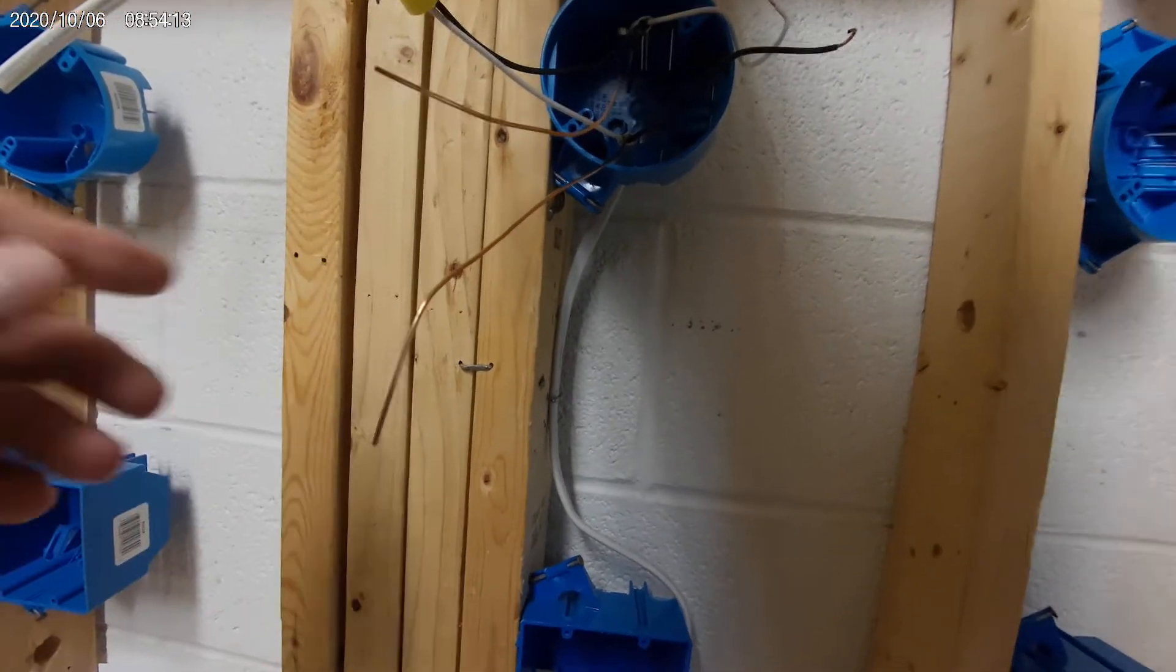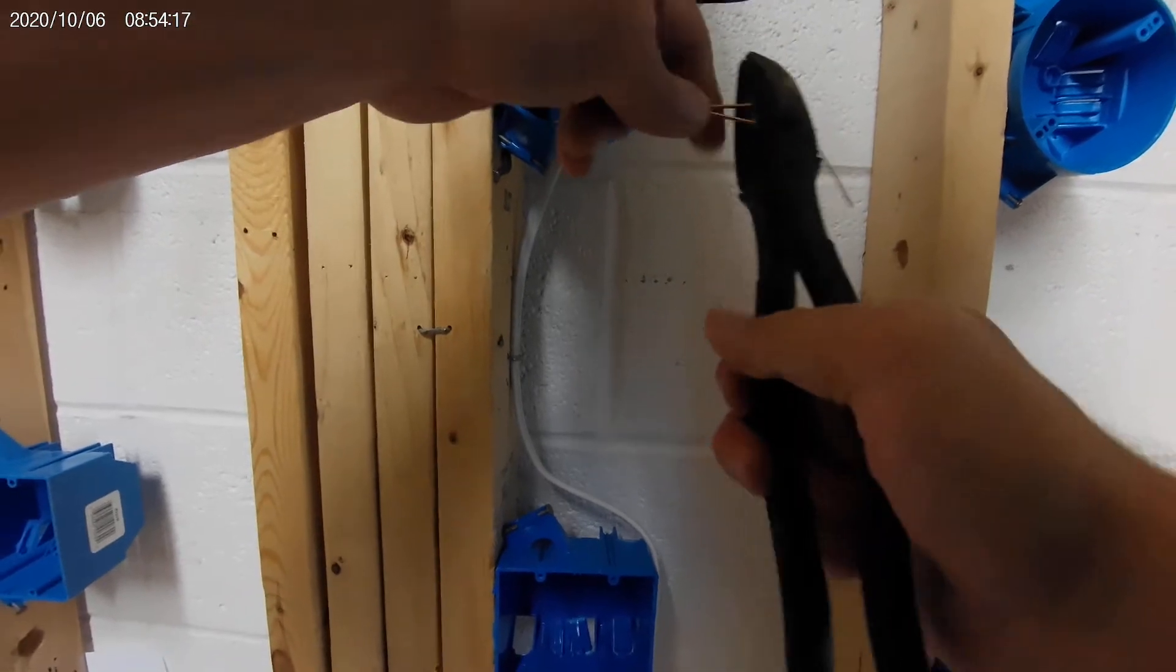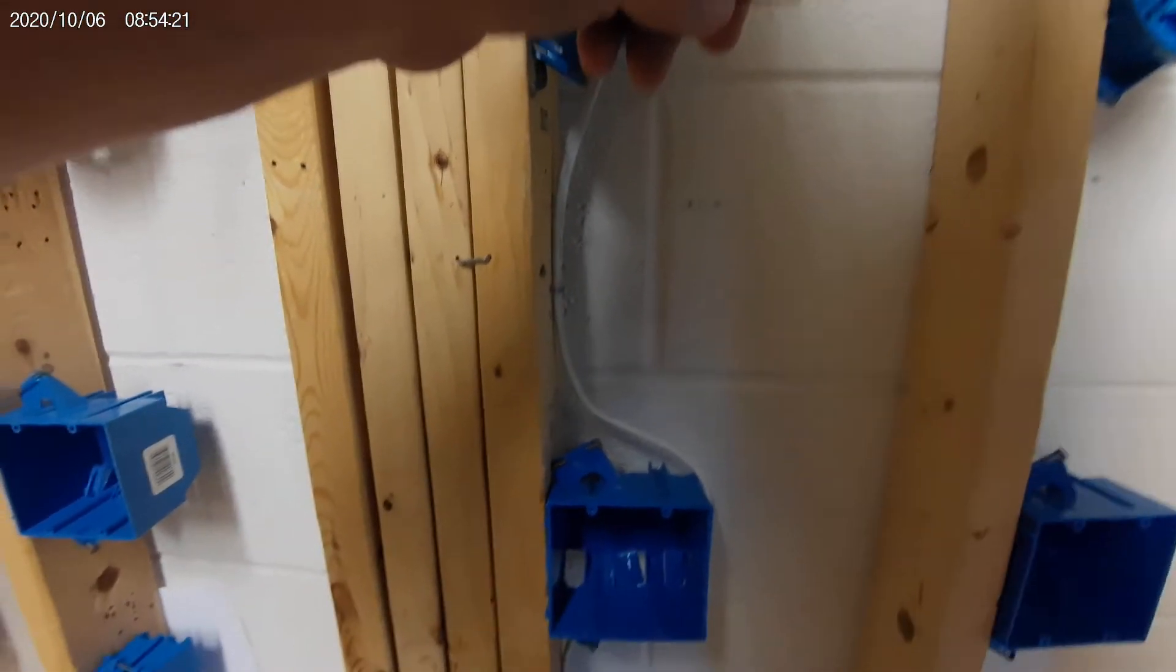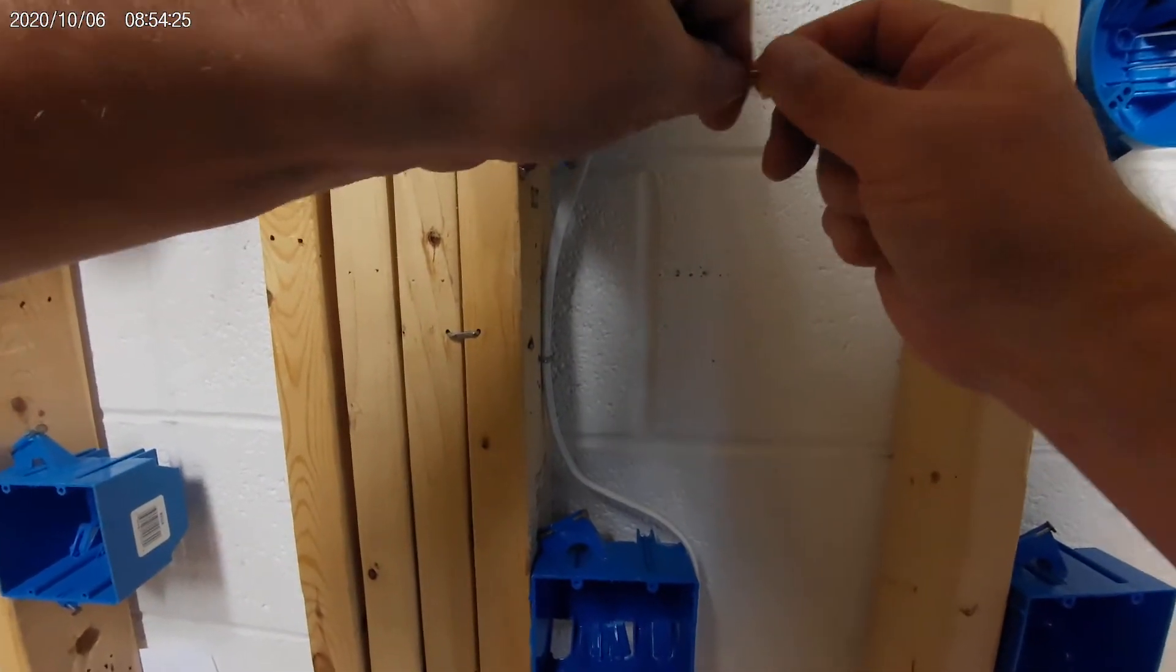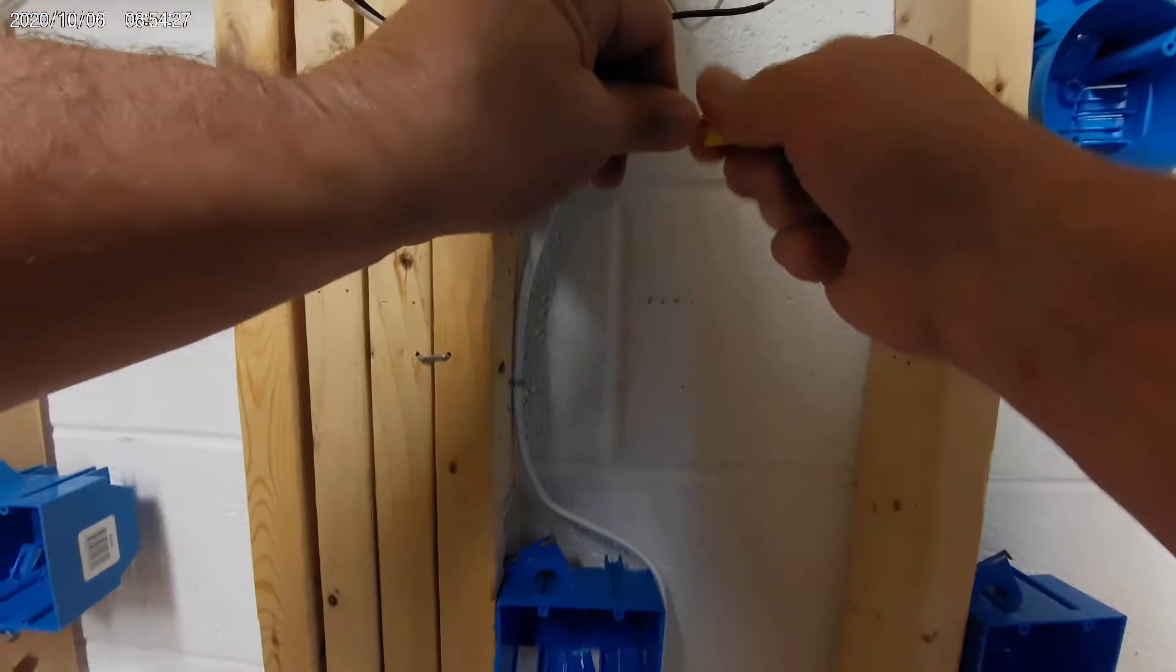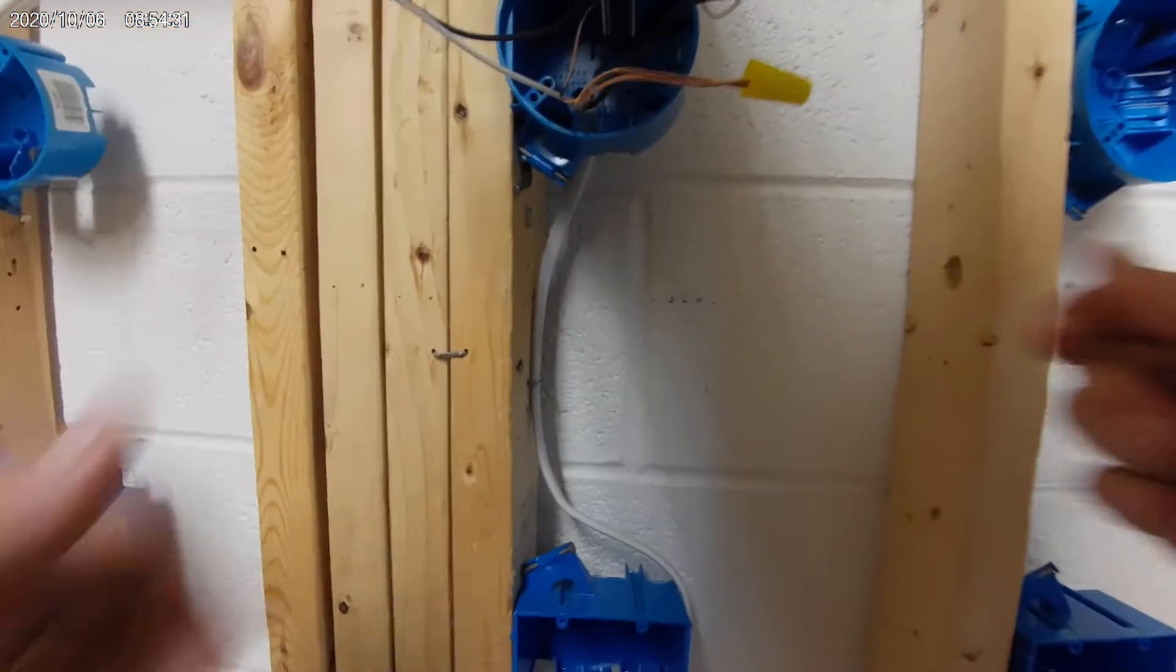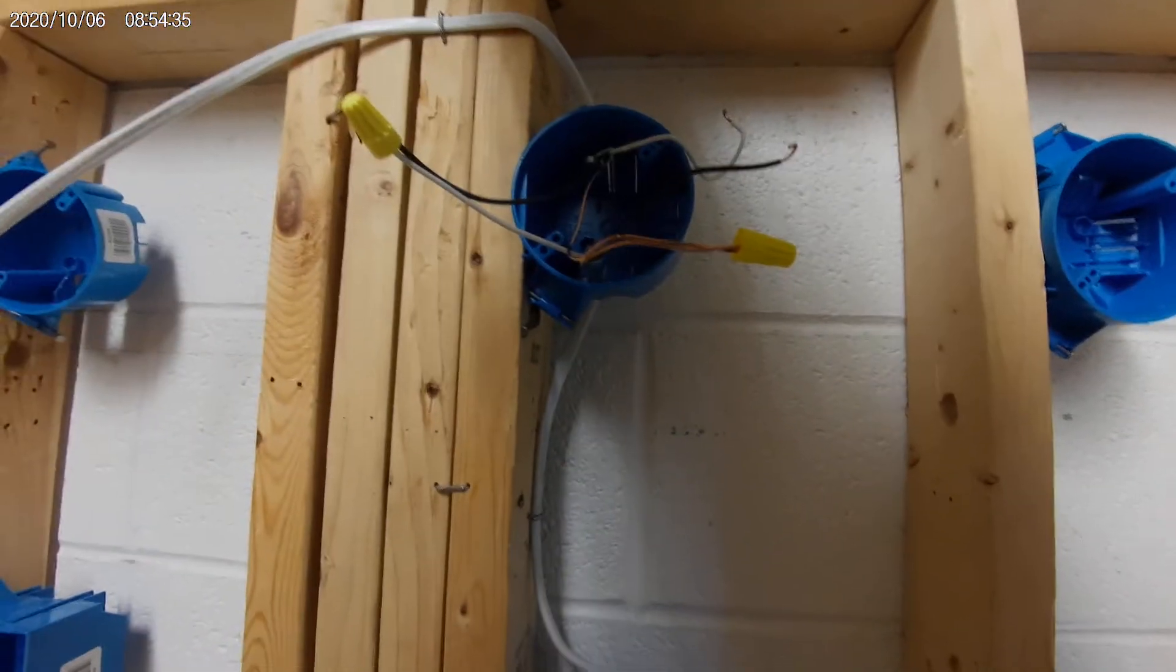The purpose of the ground is for the non-current parts, metal parts of a fixture. Since there is no metal, there is nothing to ground. So what we will do is take the grounds and just wire nut them off. We don't cut them out because what if in the future someone comes on with a fixture that does have metal parts, then it needs to be grounded.